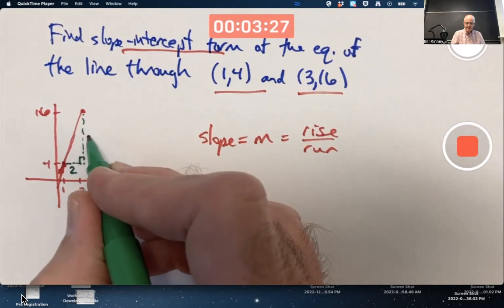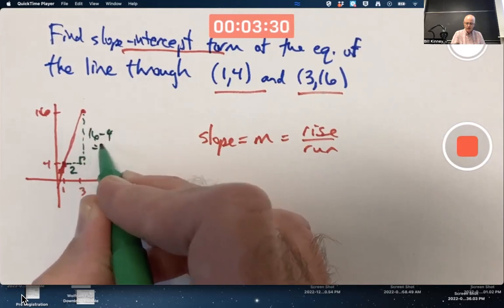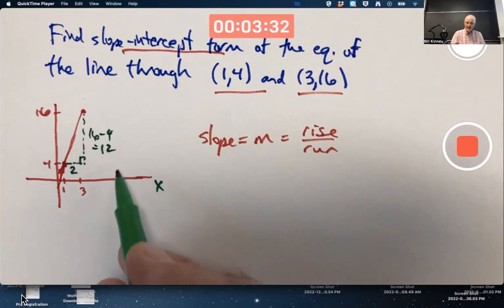The rise is a positive number because the graph goes up. What's that distance? It would be 16 minus 4, which is 12. The rise is 12, the run is 2, 12 over 2, 6 is your slope.